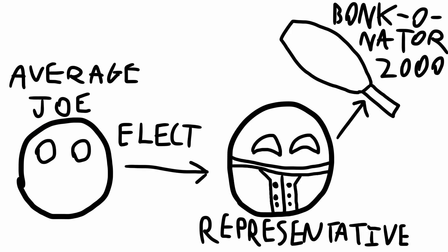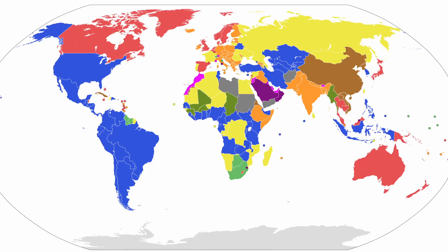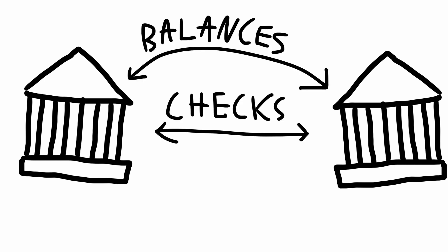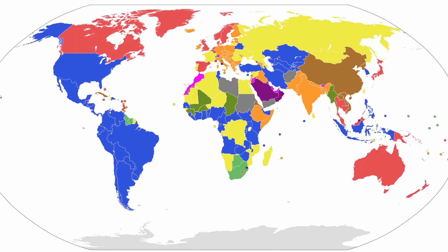Indirect democracy functions by having citizens elect representatives who hold the levers of political power. This comes in numerous different forms, but nearly all representative democracies have power split between multiple institutions and have a system of checks and balances, which checks on and balances out the power of each institution. The overwhelming majority of democratic countries follow the representative or indirect democratic way.